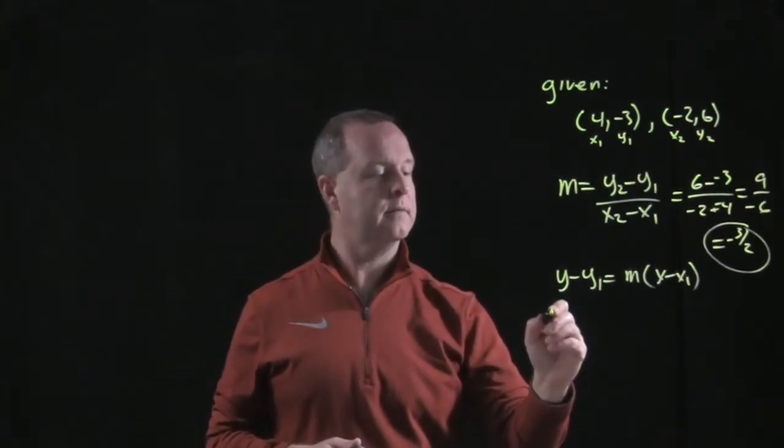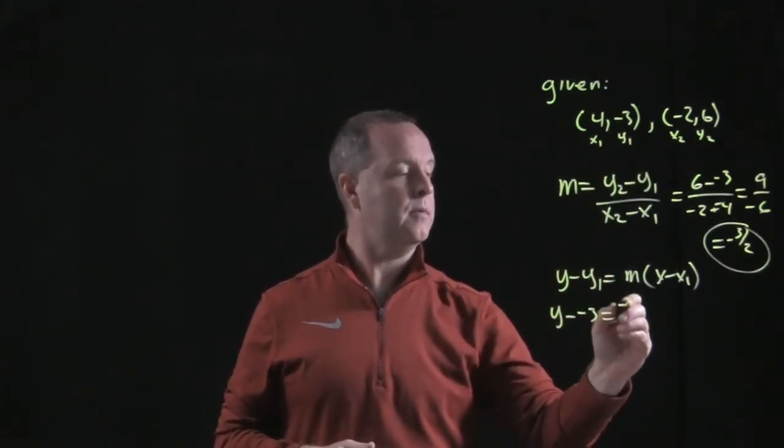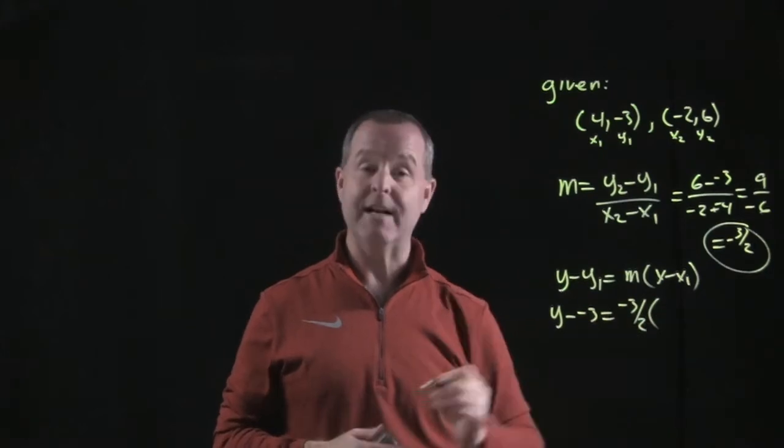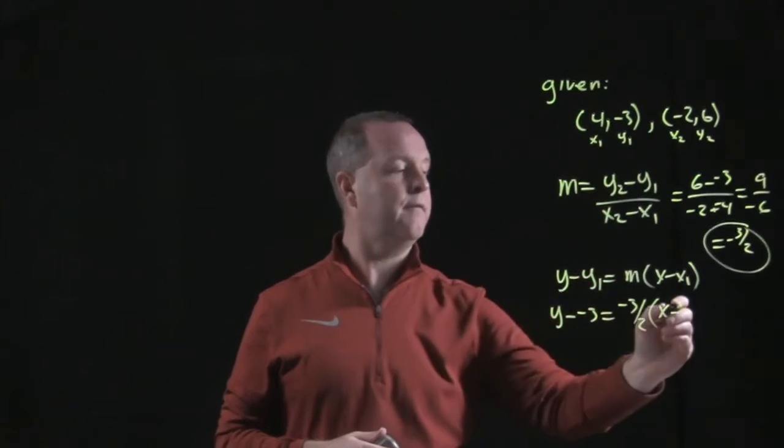So y minus y1, which is negative 3, equals slope, which we discovered was negative 3 halves, times x minus x1, which is 4.